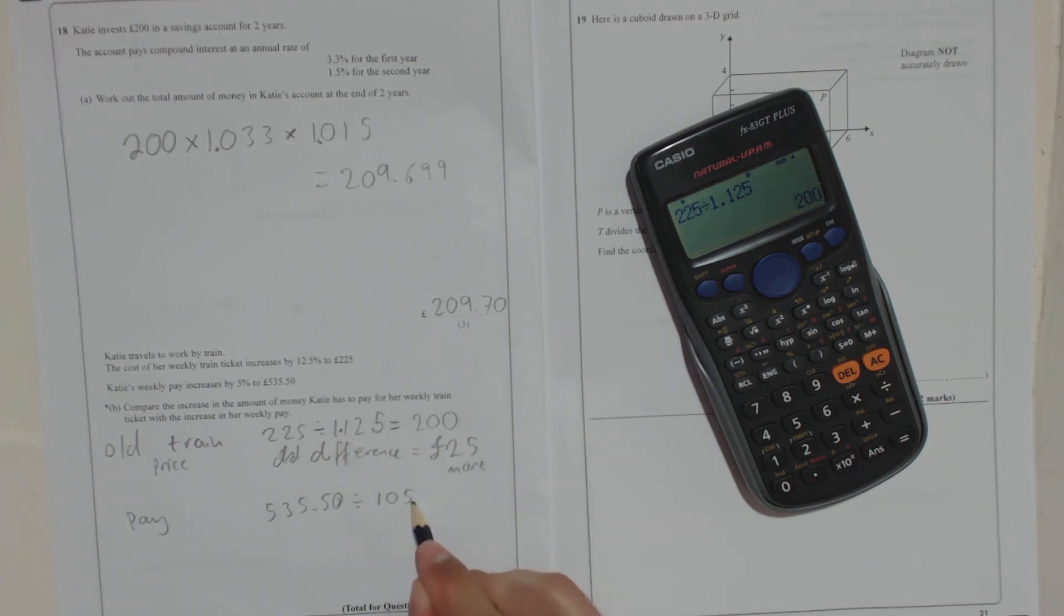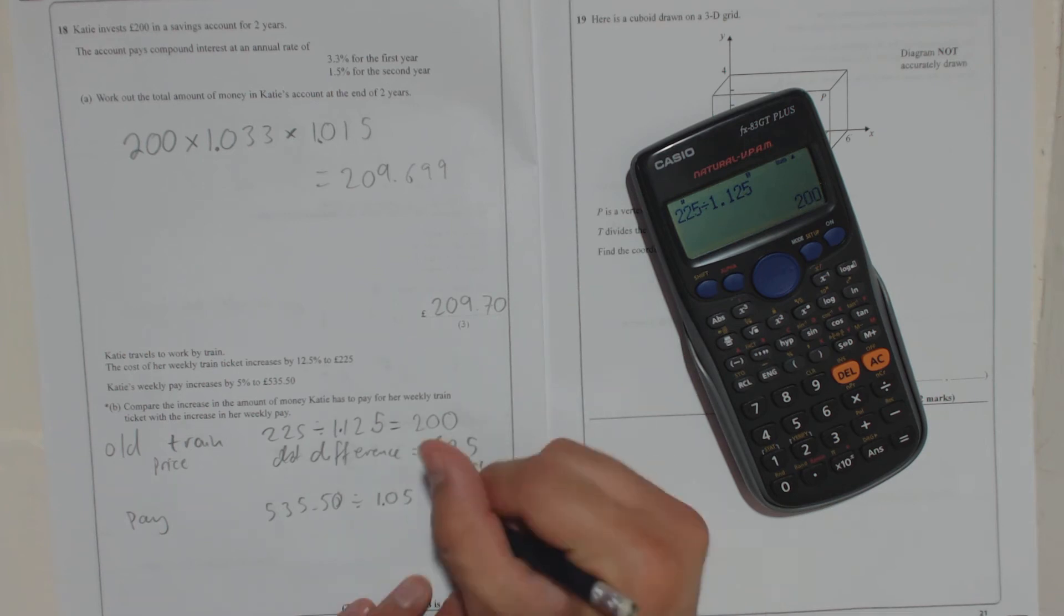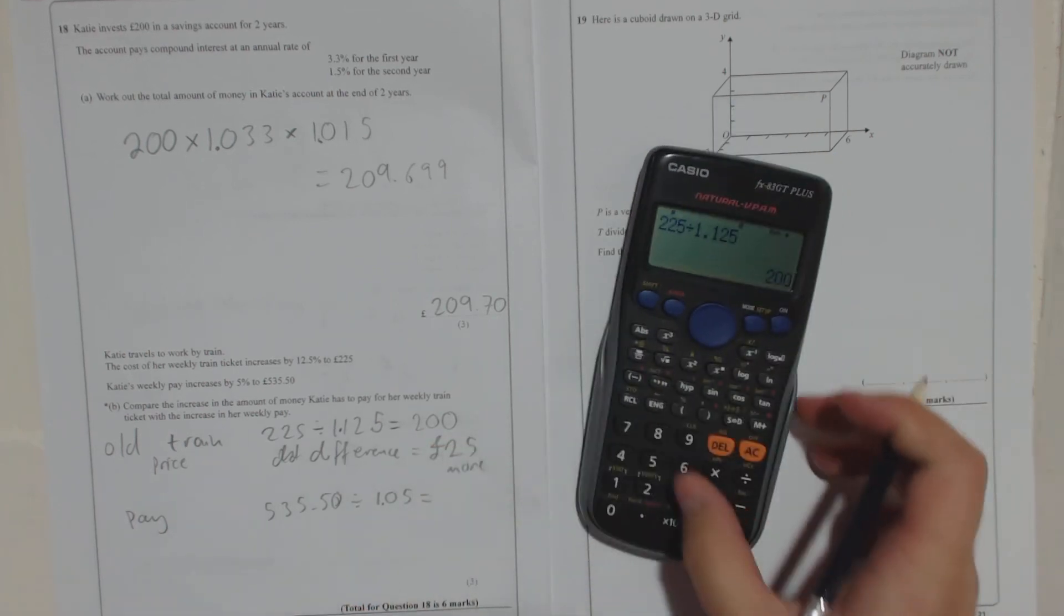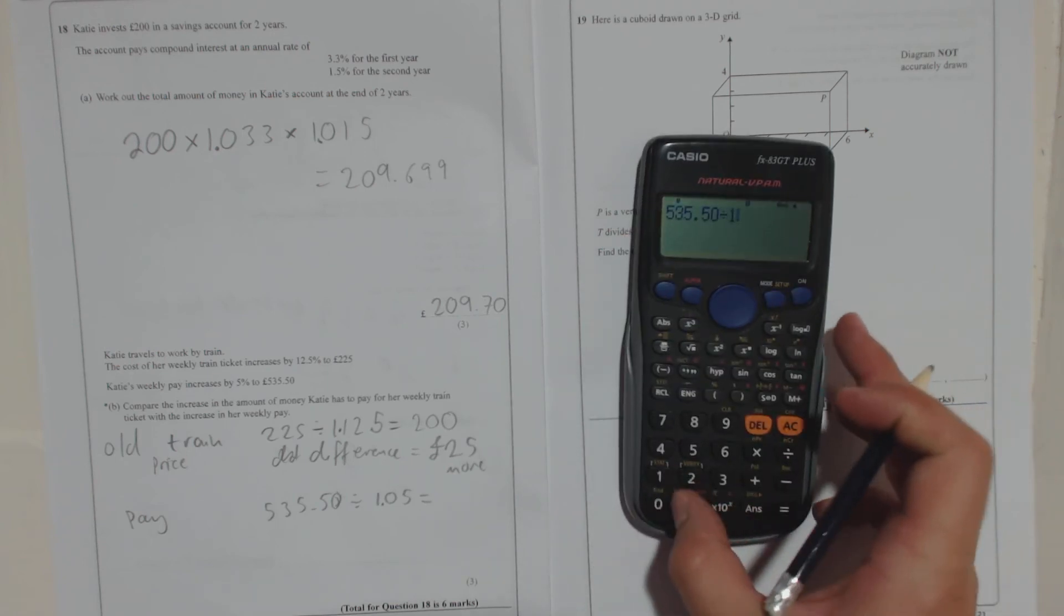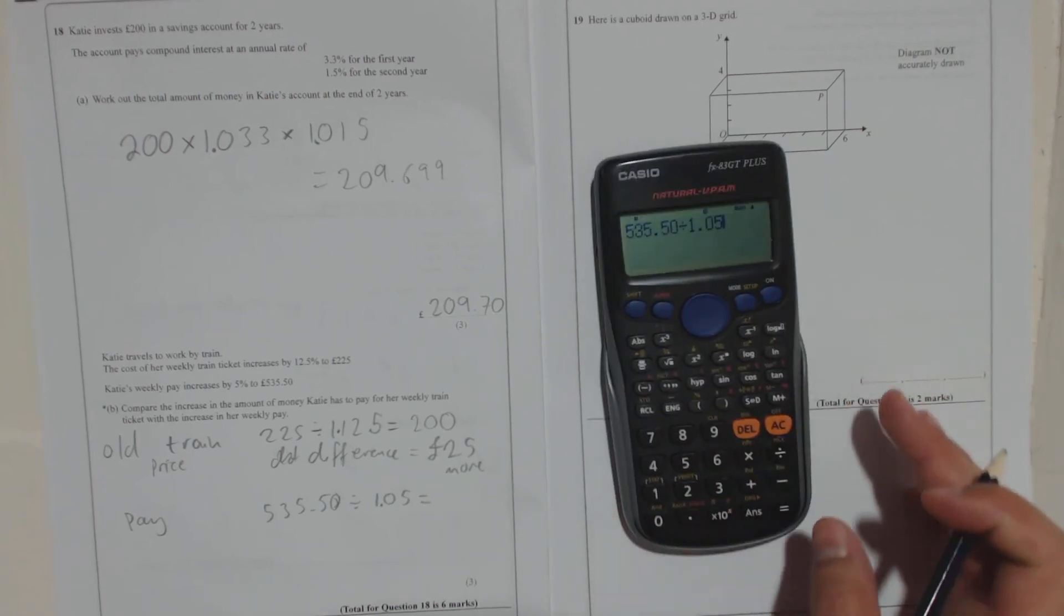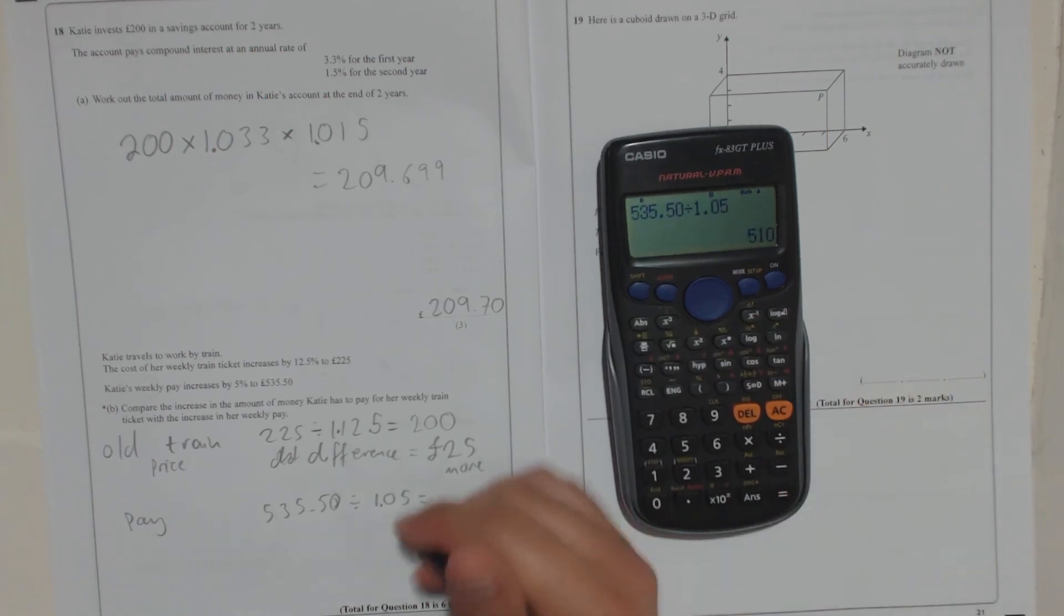That number is a decimal. So again, divide by 100, 1.05. So if we take the new amount and divide by 1.05, you will get the old amount. So 535.50 divided by 1.05. And that gives us 510.